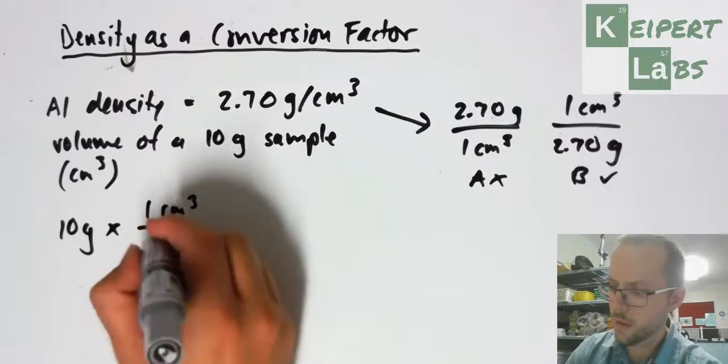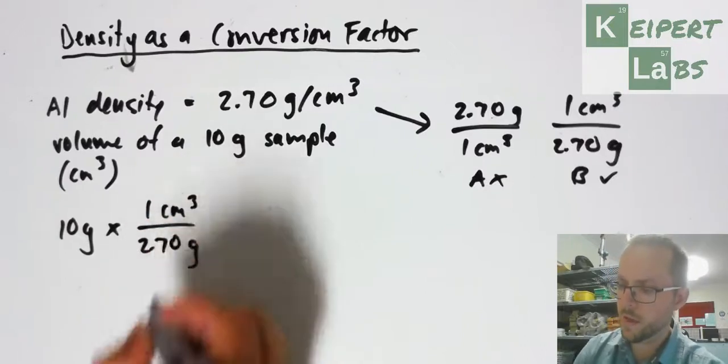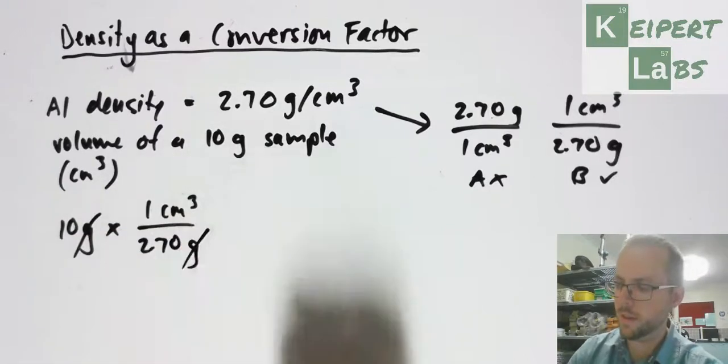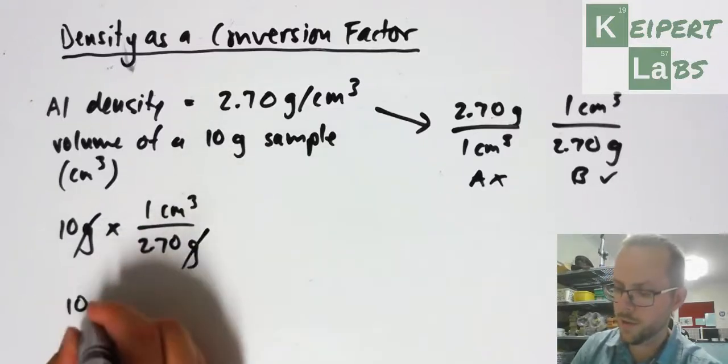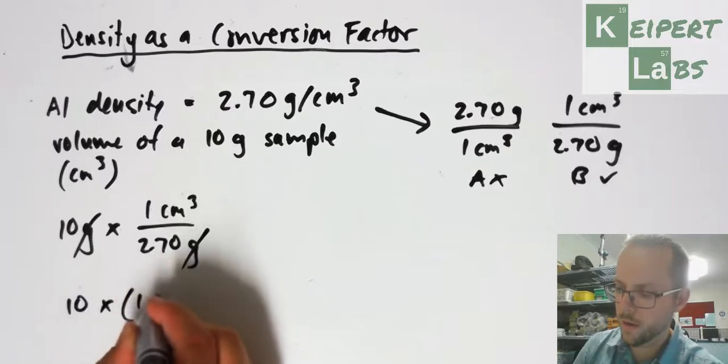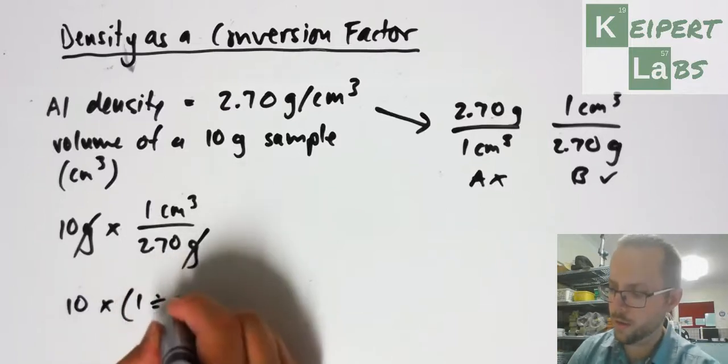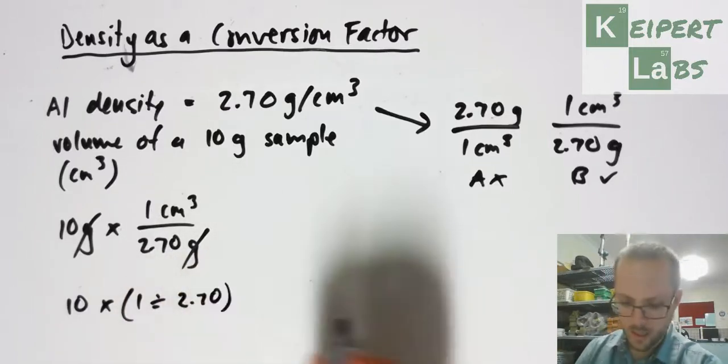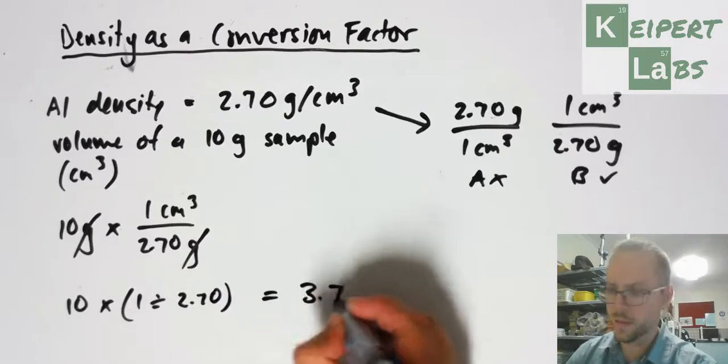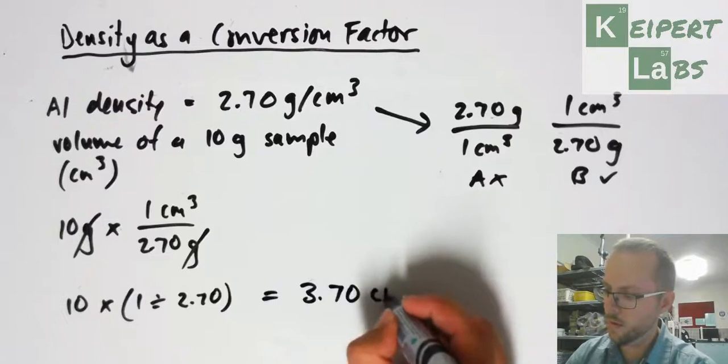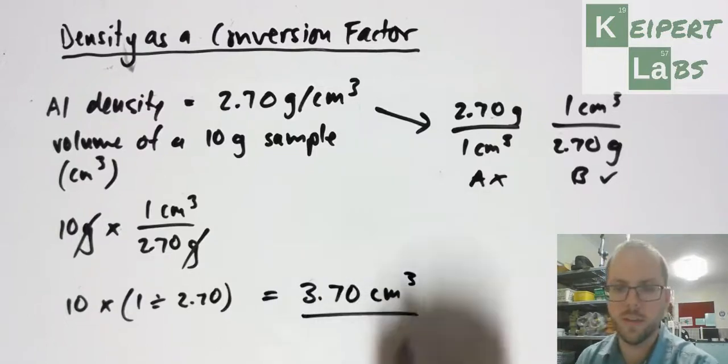Writing in those units, 1 cubic centimeter over 2.70 grams, you can see that my grams cancel and I'm left with cubic centimeters. In my calculator, I do 10 times 1 divided by 2.70, and I end up with 3.70 cubic centimeters to 3 significant figures.